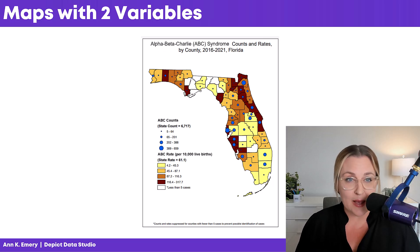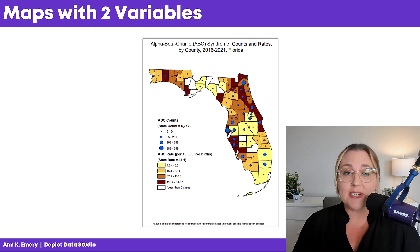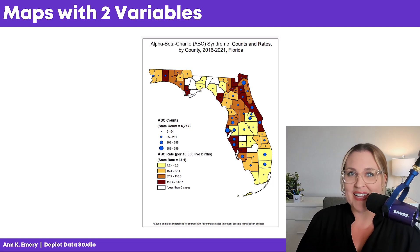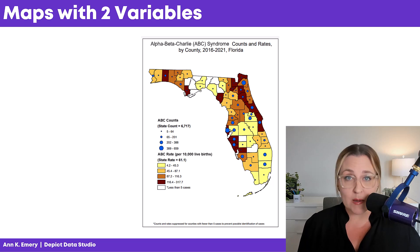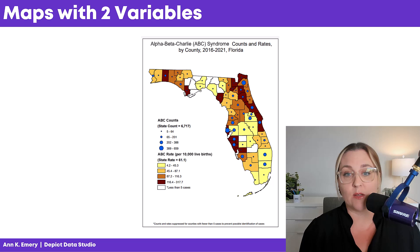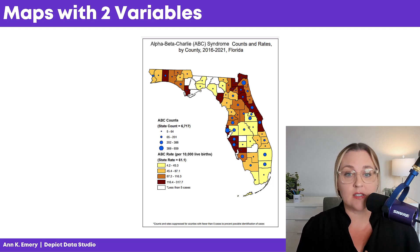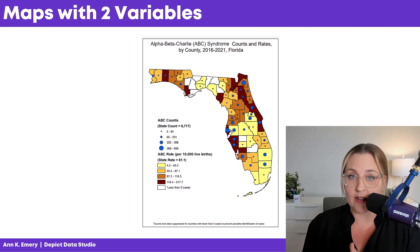Let's talk maps — busy maps, dense maps, maps with two variables. We're pretending that we're looking at the Alpha Beta Charlie syndrome, the ABC syndrome. This was a one-page PDF posted on this org's website, and they were looking at counts with the circles and rates with the color coding.